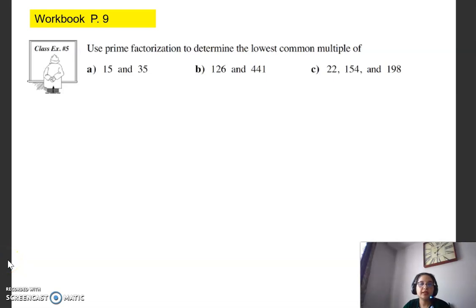So working with LCM, the lowest common multiples, we're going to be doing example number five on page nine in your workbook. I will do part B first and show you again just a review of the steps we did in the earlier example.